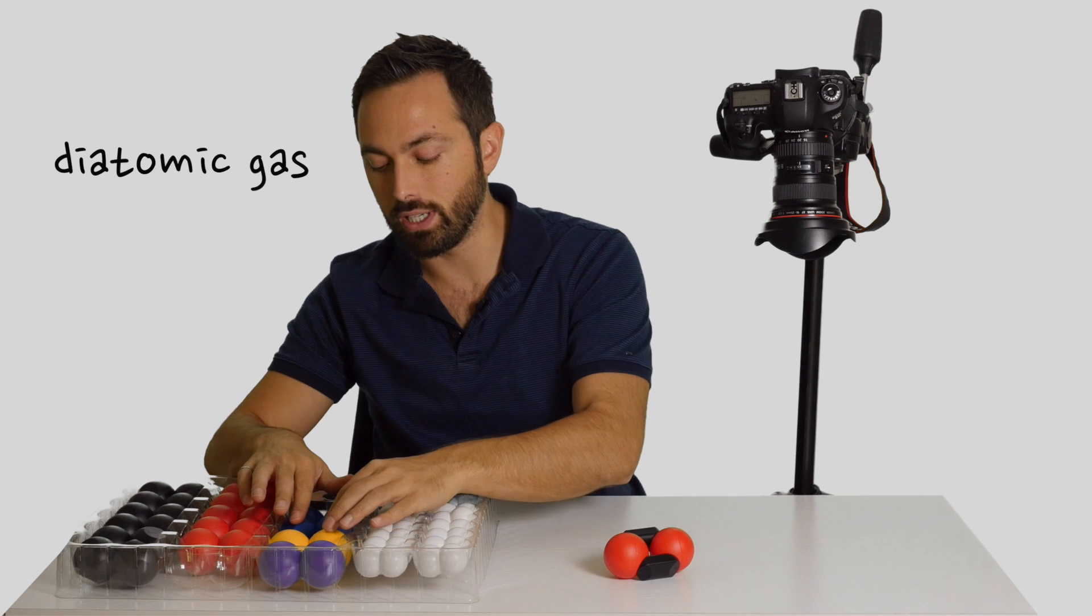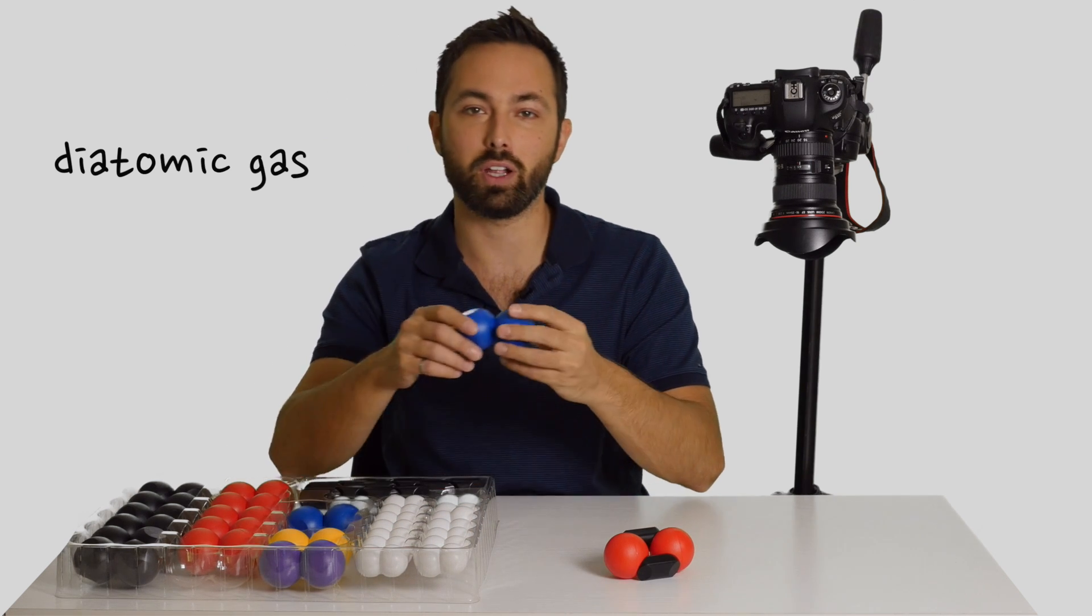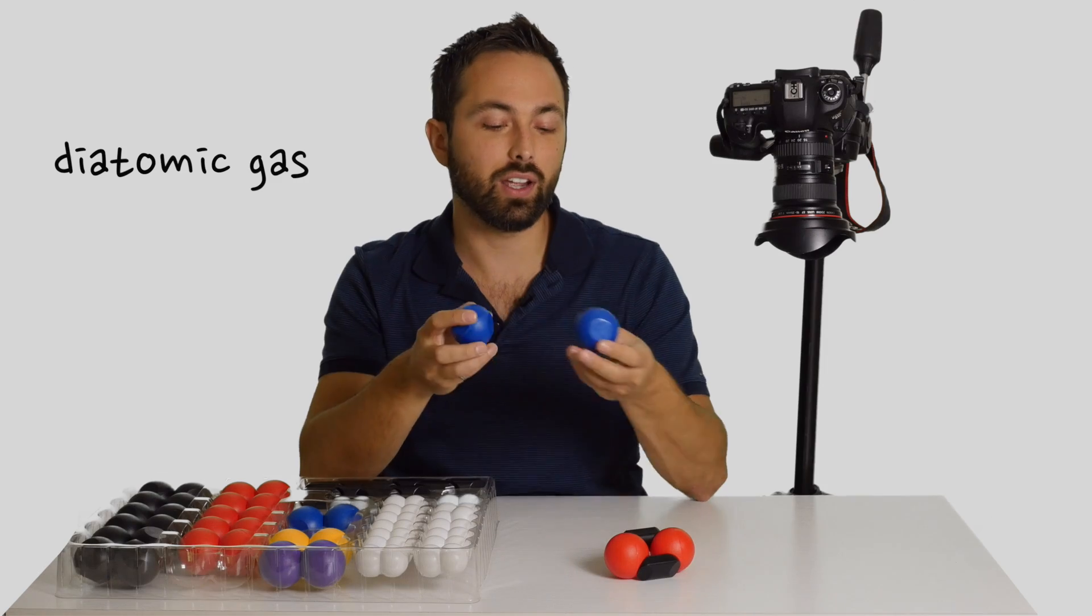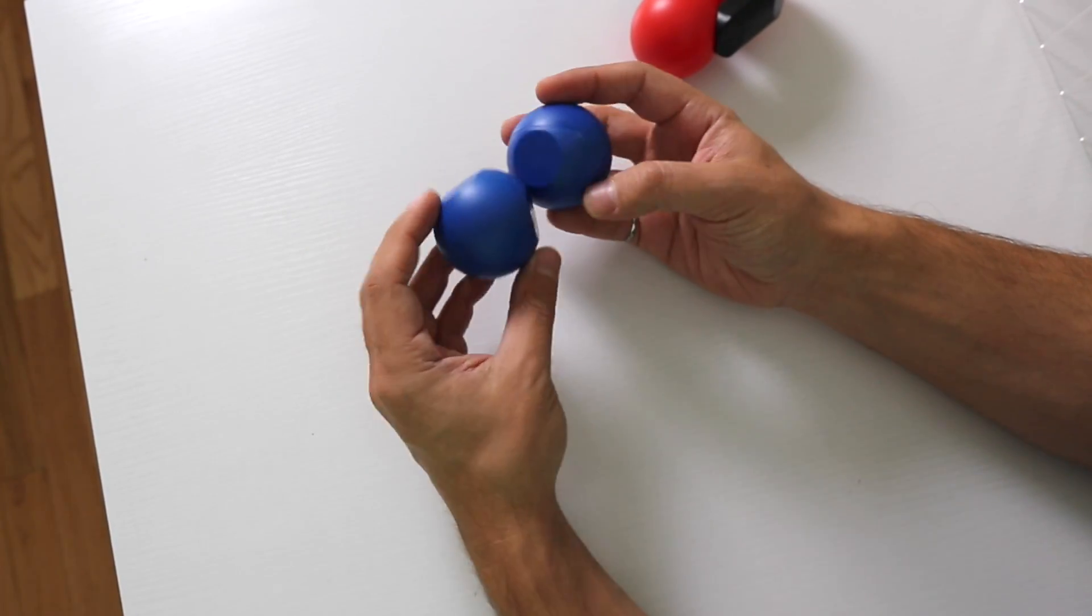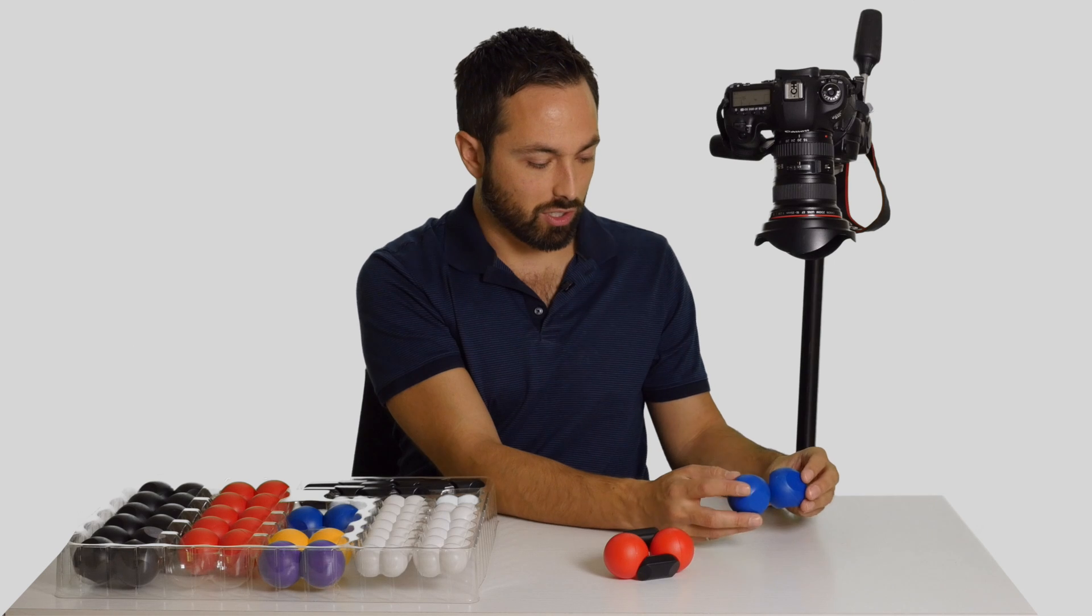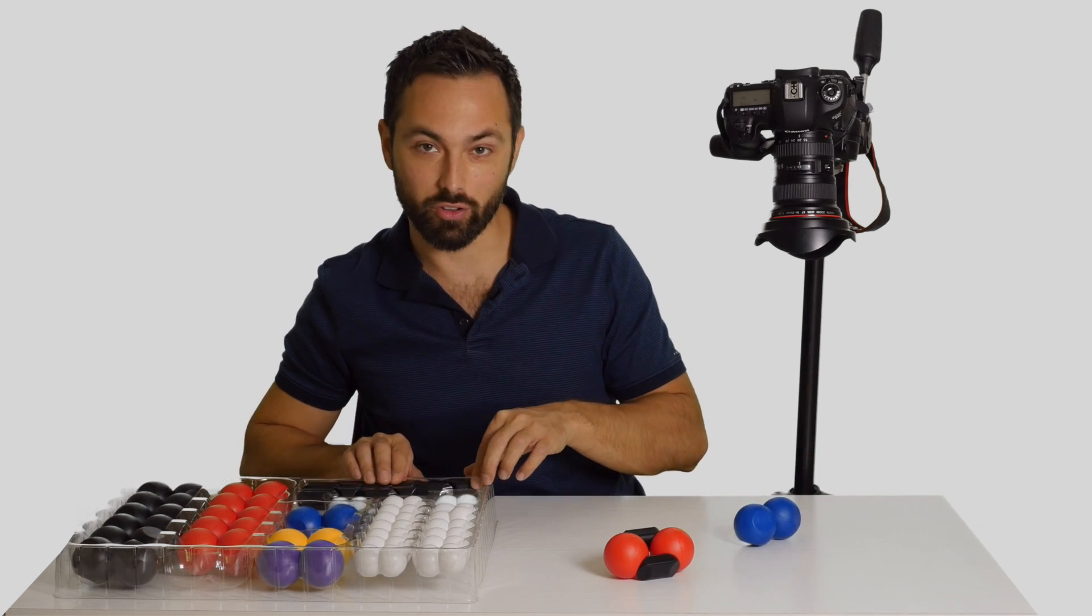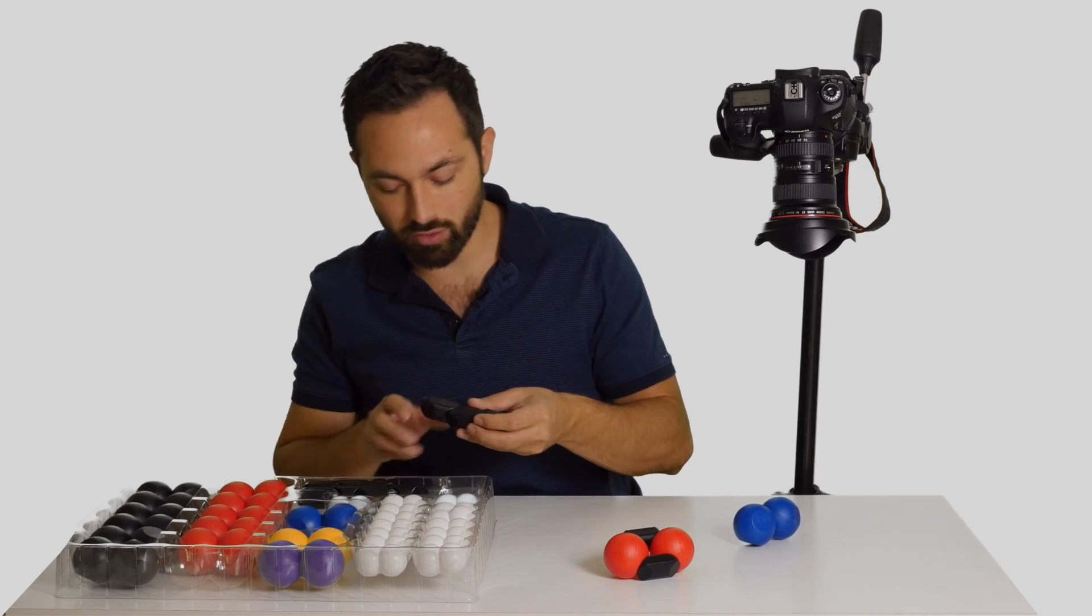Nitrogen is another diatomic gas. It's diatomic, meaning two atoms. So here we actually have three flat surfaces on two nitrogen atoms. And so we're going to need to triple bond them, although they're trying to single bond themselves right now.